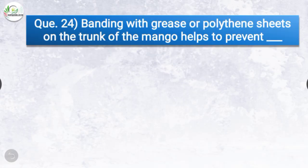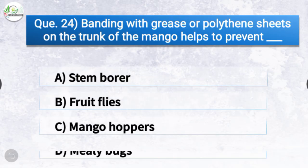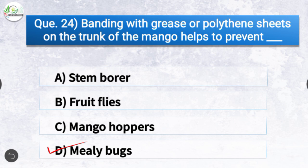Question number twenty-four: Banding with grease or polythene sheets on the trunk of mango helps to prevent dash. The options are stem borer, fruit flies, mango hoppers, or mealybugs. The correct answer is option D, mealybugs — banding with grease or polythene sheets on the trunk of mango helps to prevent mealybugs.